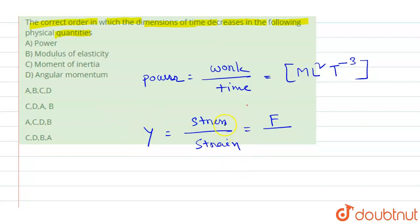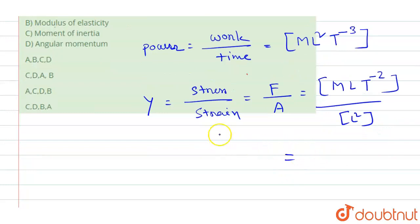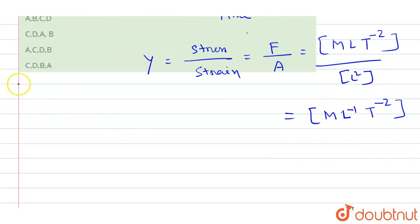So we know the stress equals to force by area. Now force is MLT⁻², and area is L². So finally, Young modulus or modulus of elasticity dimension will be ML⁻¹T⁻². Next this...